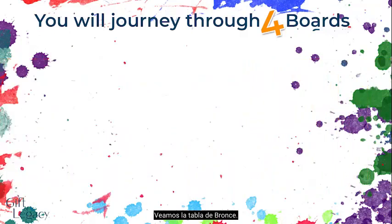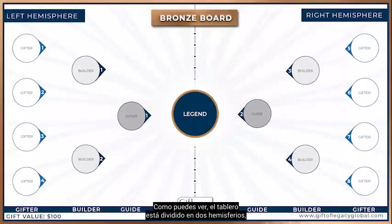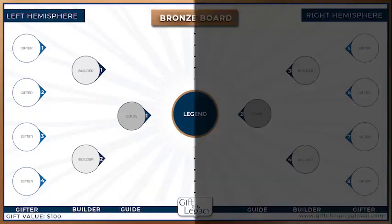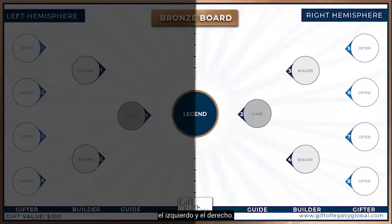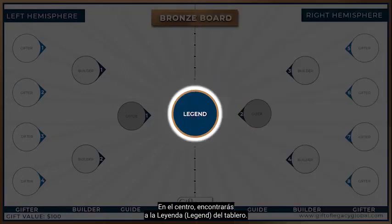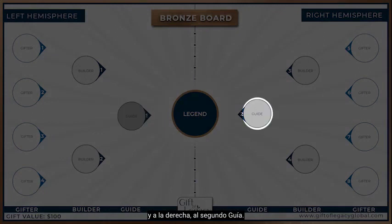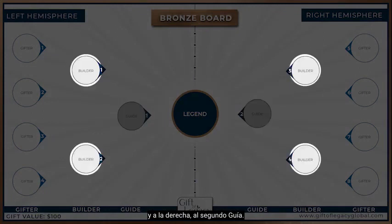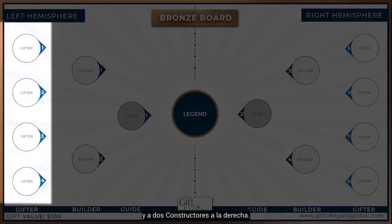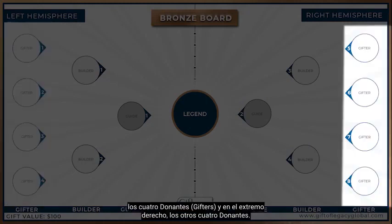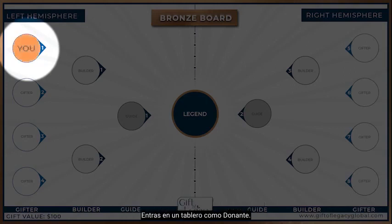Let's look at the bronze board. As you can see, the board is divided into two hemispheres — the left hemisphere and the right. In the center you will find the legend of the board. Next to the legend on the left you will find the first guide, and on the right the second guide. Then you will find two builders in the left hemisphere and two builders to the right, and finally on the far left the four gifters and the far right the other four gifters.